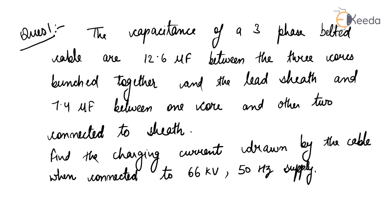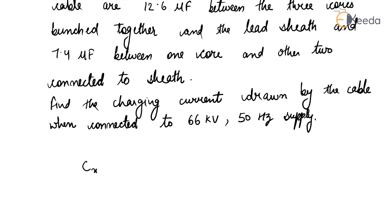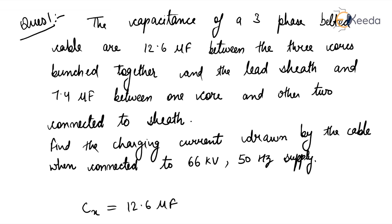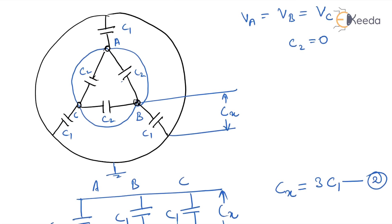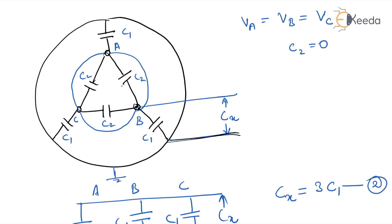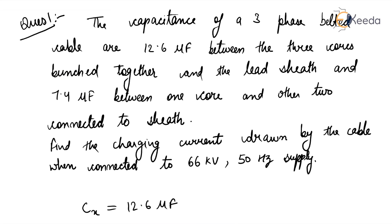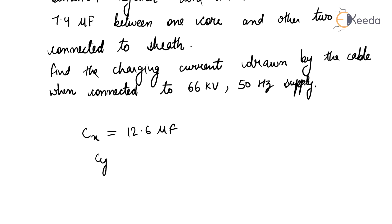The question is: the capacitance of a 3-phase belted cable — CX is given as 12.6 microfarad, measured between the 3 cores bunched together and the lead sheath. CY is equal to 7.4 microfarad, measured between 1 core and the other 2 cores connected to the sheath.